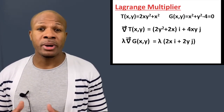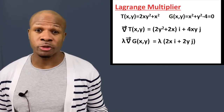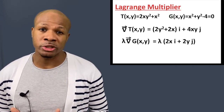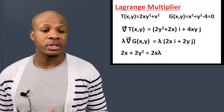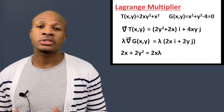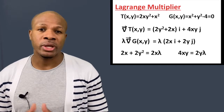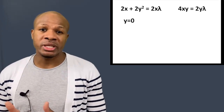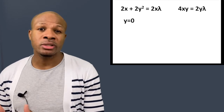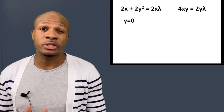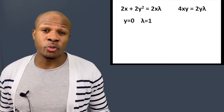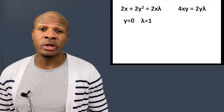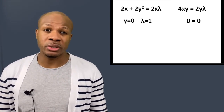The gradient of G is ∇G = 2xî + 2yĵ. Setting ∇T = λ∇G and matching components: the î components give 2x + 2y² = 2xλ, and the ĵ components give 4xy = 2λy. From the first equation, since there's no y² term on the right side, y must equal zero, which leaves 2x = 2xλ, so λ = 1. Substituting y = 0 into the second equation gives 0 = 0, which yields no additional information.